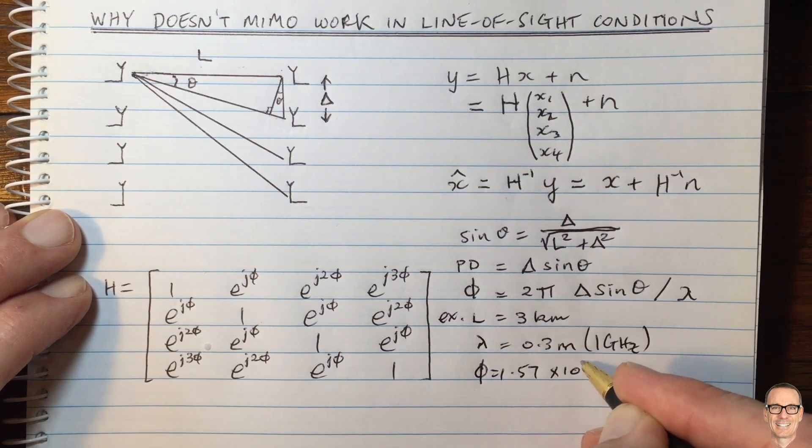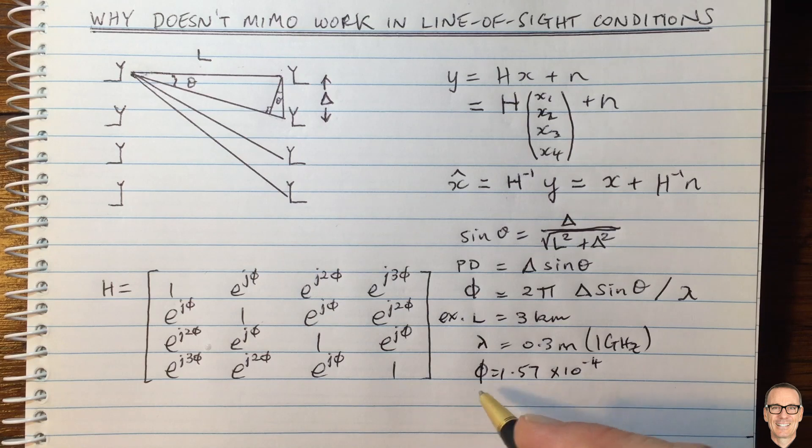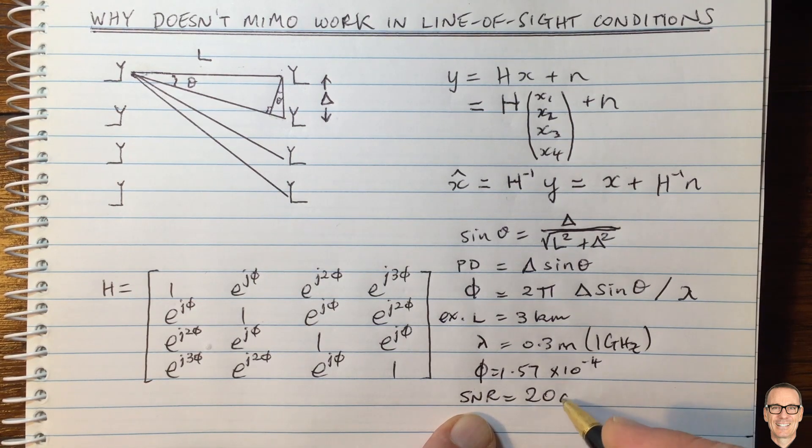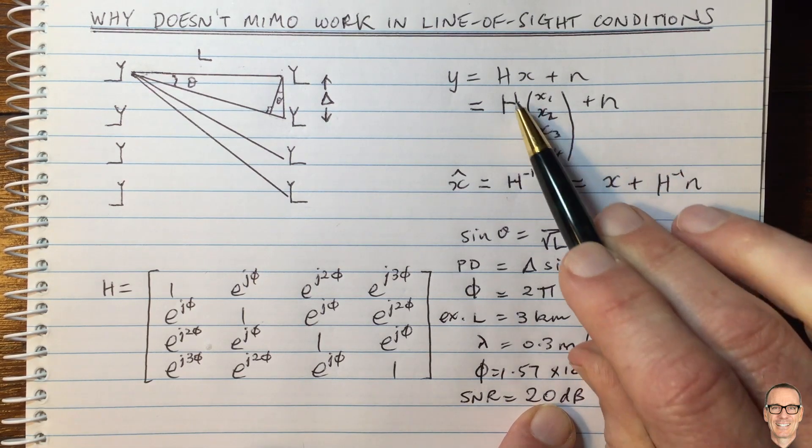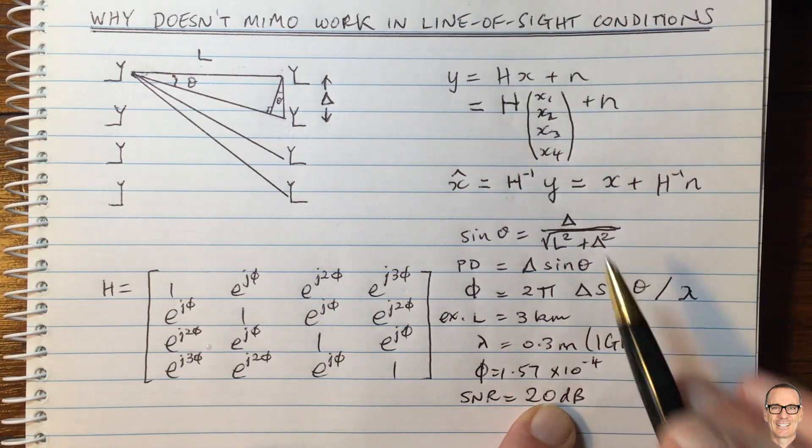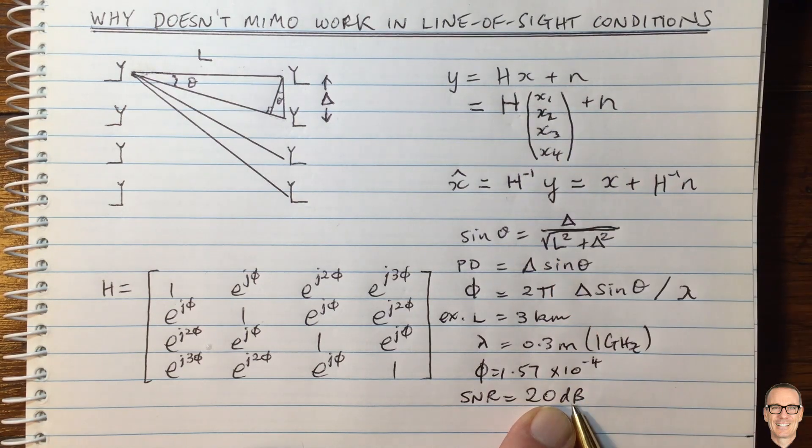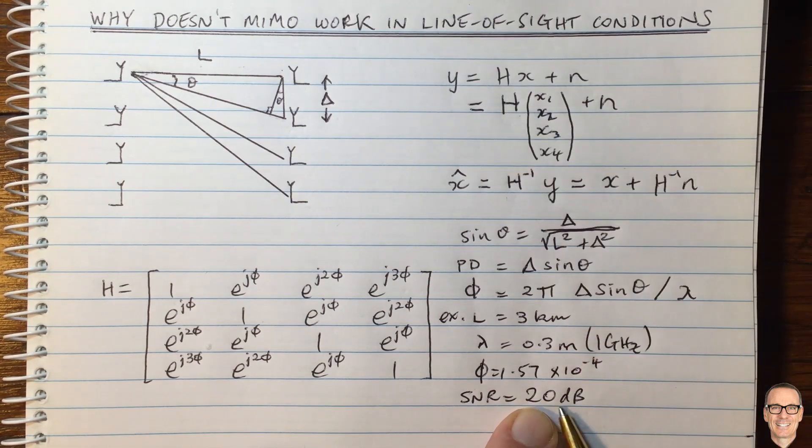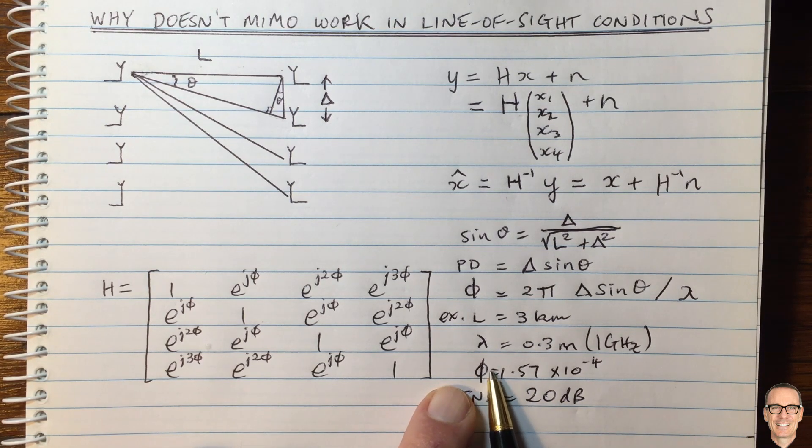which is a rather small number. If we have a signal-to-noise ratio of 20 dB, which is reasonably high for mobile communications, then the noise in the estimates of h using typical channel estimation techniques would be in the order of 3 to 10 times the value of phi.